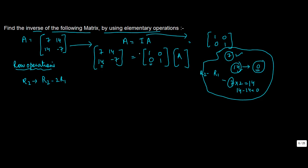Our objective is to achieve the identity matrix on the left-hand side. We know that A × A⁻¹ = I. We started with I on the right-hand side; once we convert the left side into I, whatever values appear on the right-hand side will be the inverse. We begin by working on the second row.